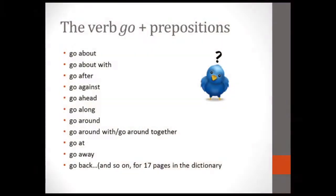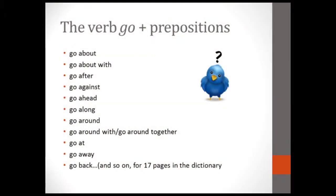Here's the word 'go.' You can go about, go about with, go after, go against — you see this long list and I only got to the B. These phrasal verbs are so difficult that good companies have made dictionaries specifically for them. With 'go,' there are 17 pages of entries. They're terrible words — they're so hard.